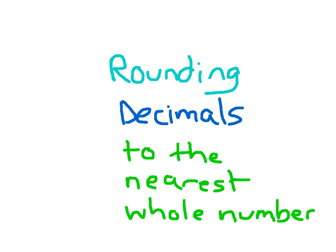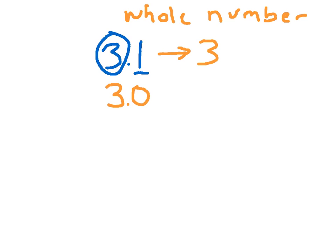Let's take a look at rounding decimals to the nearest whole number. When I'm rounding to the nearest whole number, you'll notice here I went 3 and 1 tenth. I found the 1's place — that 3 — and I looked at its neighbor. Since the neighbor was 1, and that was in between 0, 1, 2, 3, or 4, I kept that circle digit the same.